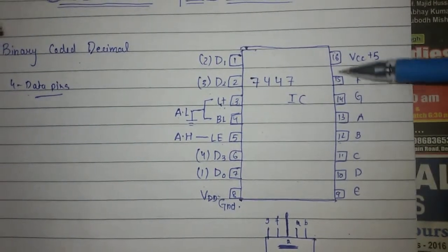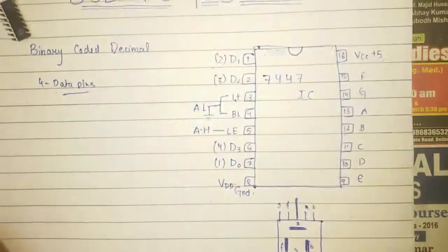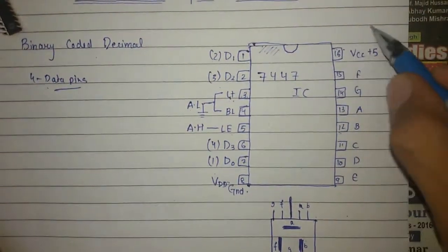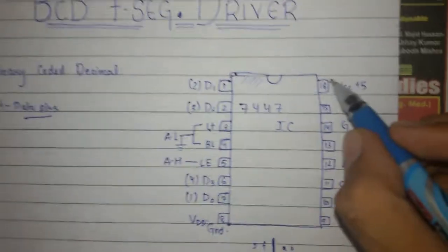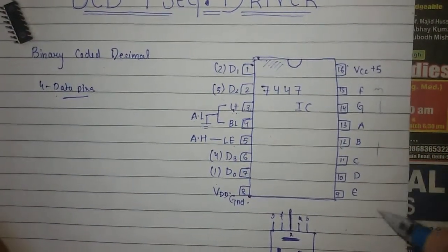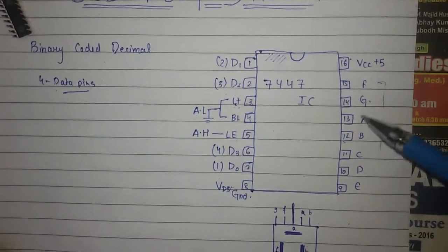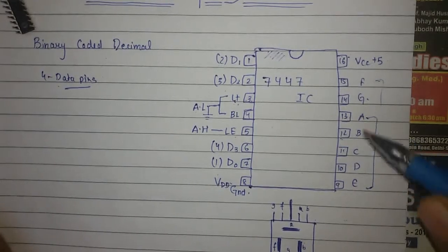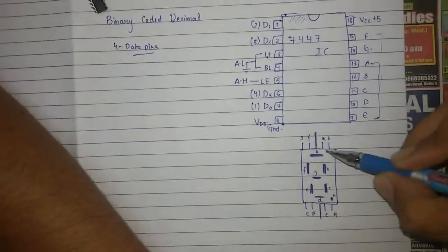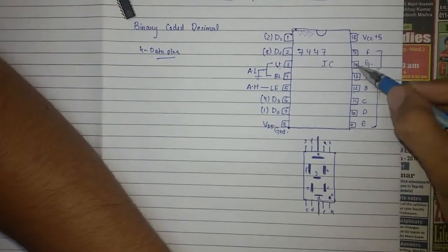On the other side of the IC, pin 16 represents VCC - we have to give 9 volts or 5 volts power supply here. The other seven pins are output pins which will be connected to the seven segment display. The connections are: pin 13 to segment A, pin 12 to B, pin 11 to C, pin 10 to D, pin 9 to E, pin 15 to F, and pin 14 to G.